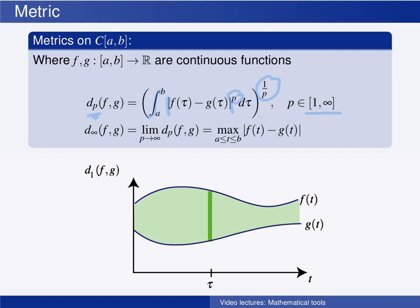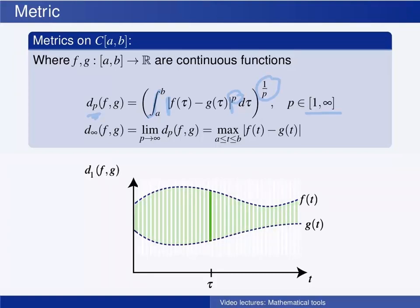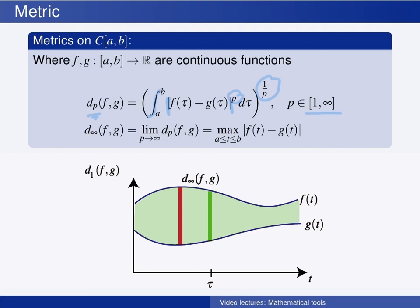If we let p go to infinity, a similar thing happens as before. Since we raise the length of each vertical line segment to the power p, the largest one totally dominates the others when we integrate. When we afterward take the p-th root, we are left with the maximum value — so the d-infinity metric for functions is the length of the longest such line segment, which is the maximum absolute difference between f and g.